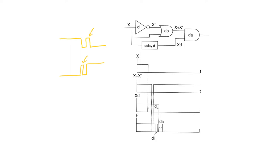A static hazard occurs when we have a single logic value that has multiple paths — at least two paths — through a logic circuit, and then it reconvenes at an AND gate or an OR gate. The two paths have to have differential delay and have to have a logic inversion between them.